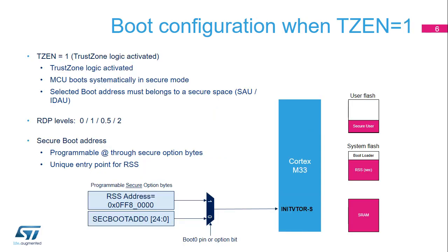This slide details the boot configuration when TrustZone is enabled. The microcontroller boots in secure mode, and the boot space must be located in secure area. The readout protection can be set to levels 0, 0.5, 1, or 2. The boot address is programmable through secure Option Bytes. The boot program can be mapped anywhere in the internal secure memories, flash or SRAM. The RSS has a unique entry point in system flash.